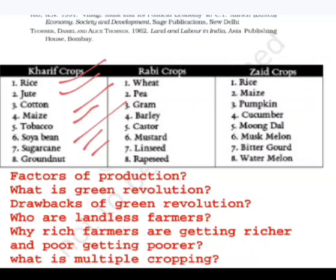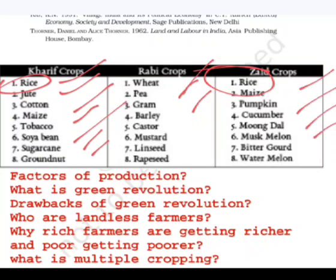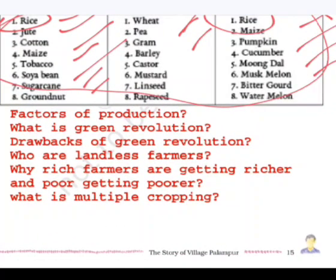Rabi crops include wheat, pea, gram, barley, castor, mustard, linseed, and rapeseed. Zayed crops include paddy, maize, pumpkin, cucumber, moong dal, musk melon, bitter gourd, and watermelon. This table of crop classifications should be memorized thoroughly as it is important for the exam.